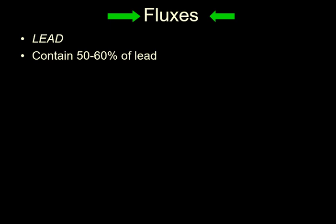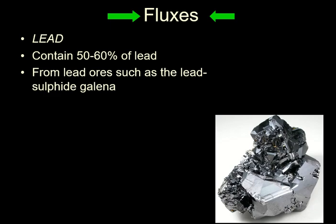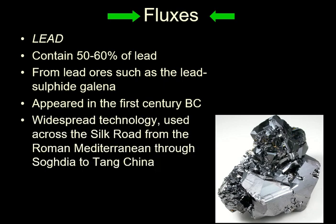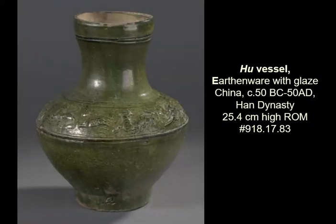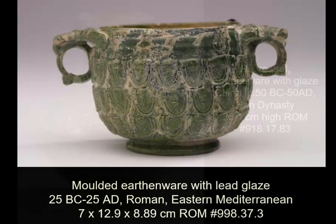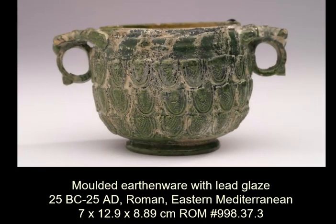Lead glazes will contain 50 to 60 percent of lead — quite a lot. Highly toxic. From the lead ore galena, typically. First appeared in the first century BC, and was, right from the beginning, a very widespread technology across the Silk Road from the Roman Mediterranean to Sogdia — Sogdia is in Central Asia — through to Tang China. Here, for instance, is actually a Han dynasty lead glaze with a green copper-based pigment. And here's a Roman one, slightly later, but they seem to be about the same date. I haven't seen anything conclusive to say it started at one end of the Silk Road earlier than the other.